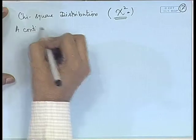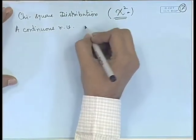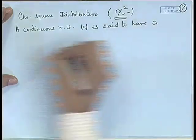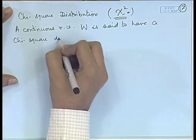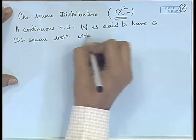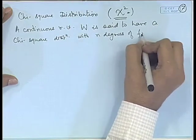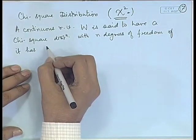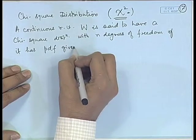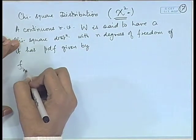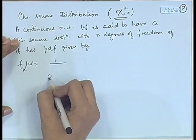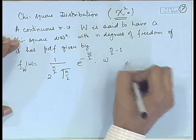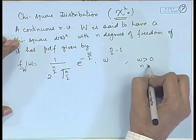A continuous random variable W is said to have a chi-square distribution with n degrees of freedom if it has probability density function given by f(w) = 1 / (2^(n/2) · Γ(n/2)) · e^(−w/2) · w^(n/2 − 1), where w is positive and n has to be positive.